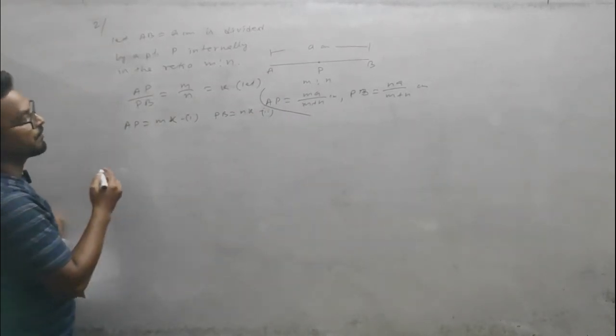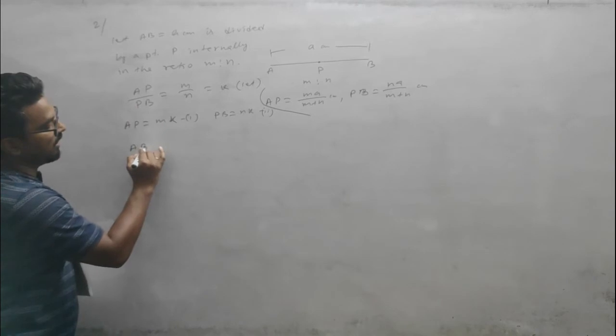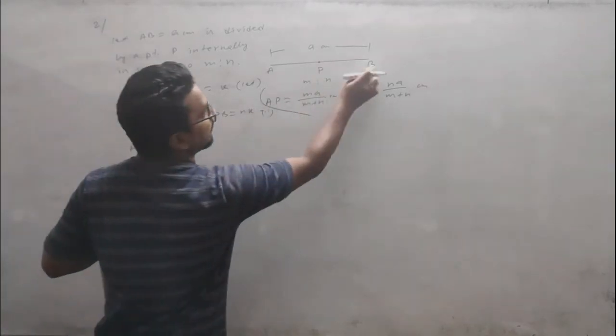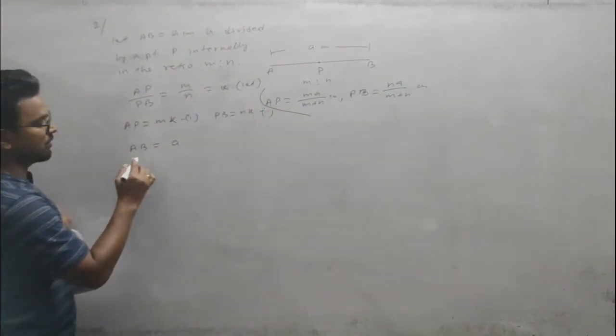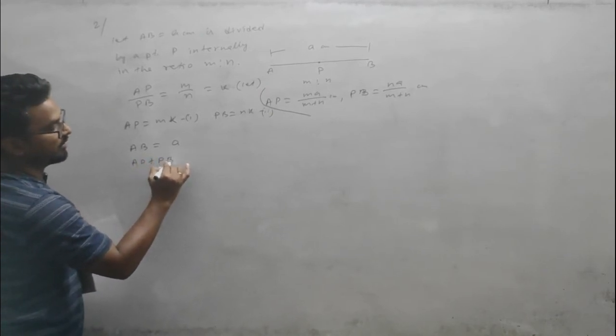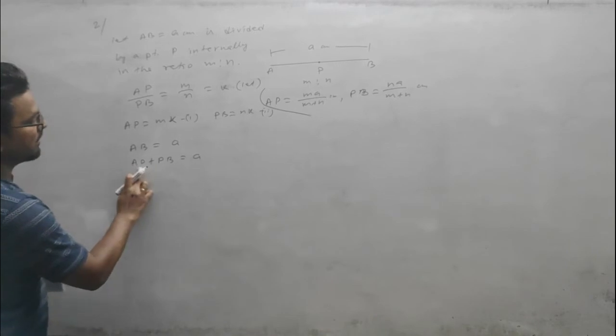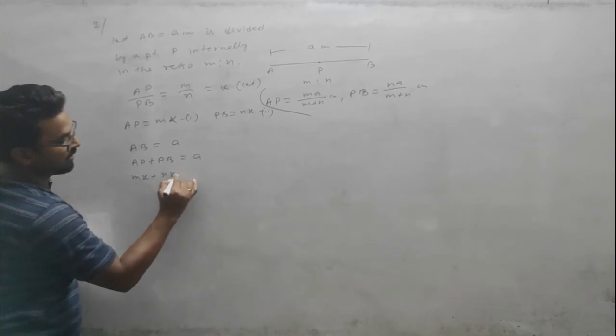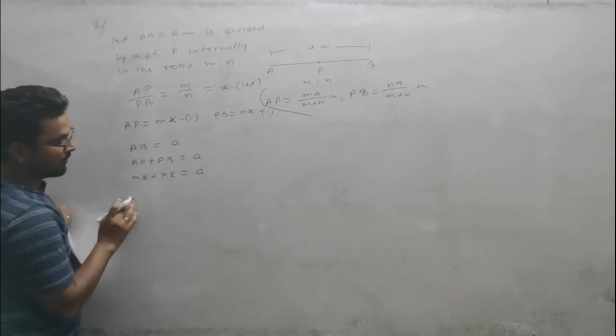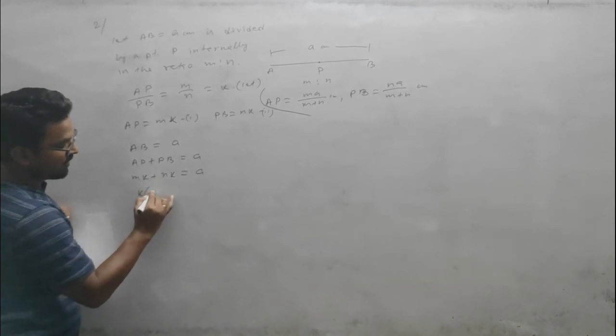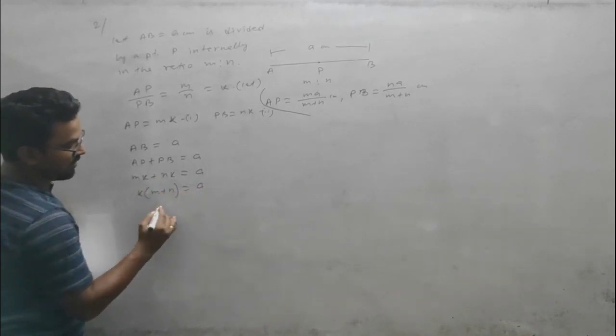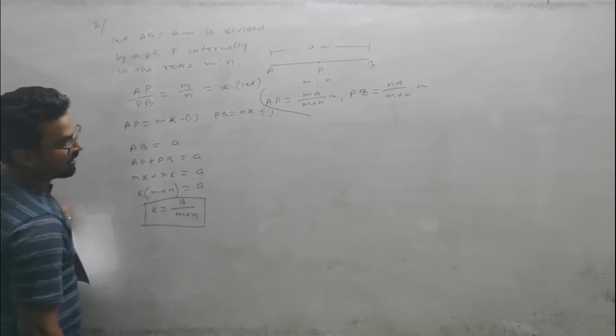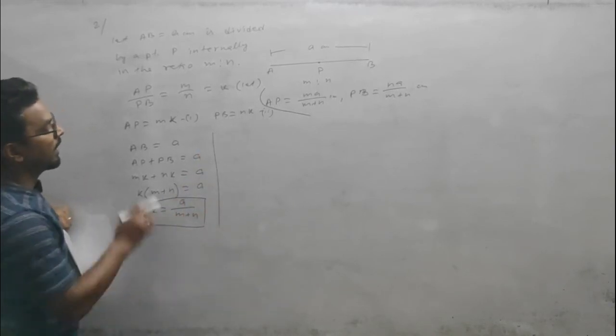Now we know that AB = AP + PB. So AP + PB = a. Substituting: mk + nk = a. Taking k common: k(m + n) = a. Therefore k = a/(m+n).